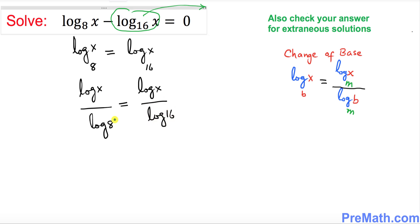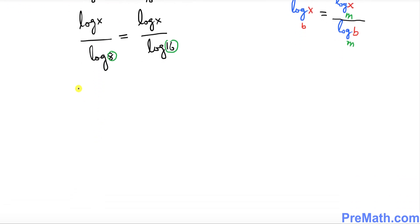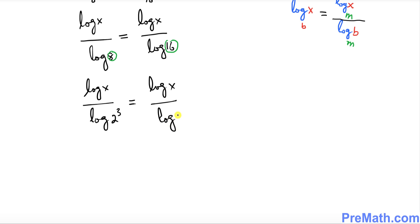Now look at 8 and 16. 8 can be written as 2 to the power 3, and 16 can be written as 2 to the power 4. So I can write log of x on top divided by log of 2 power 3, equals log of x divided by log of 2 power 4.